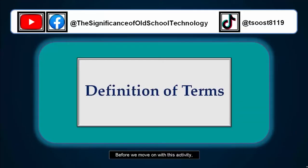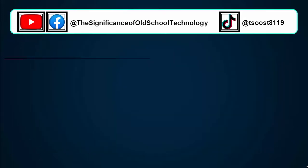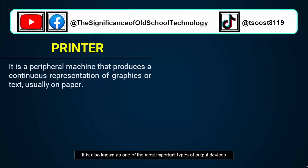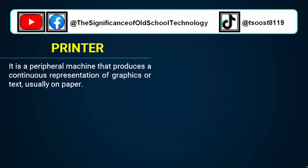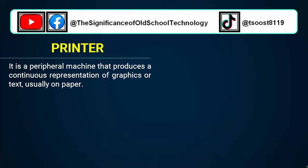Before we move on with this activity, let's talk about some of the most important definitions. A printer is a peripheral machine. It is also known as one of the most important types of output devices that produces a continuous representation of graphics or text, usually on paper.